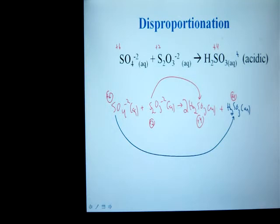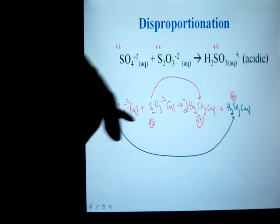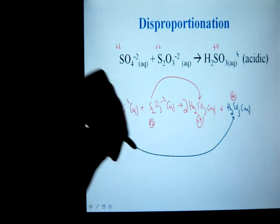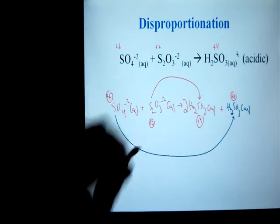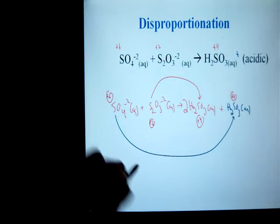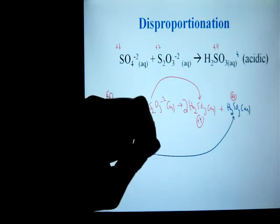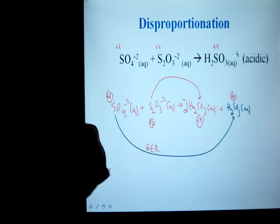So now I have two partners to determine my electron loss and gain just as normal. But for this one, I've got going from plus six to plus four. Oxidation number is getting more negative. Therefore, I am gaining electrons.